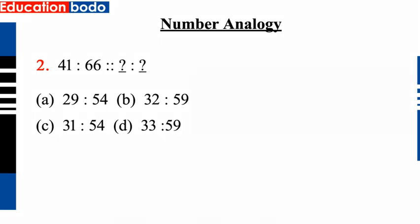Okay, the next question. The number given here — okay, the options: option A is 41, 266. Okay, let's see which option is correct. Option A.